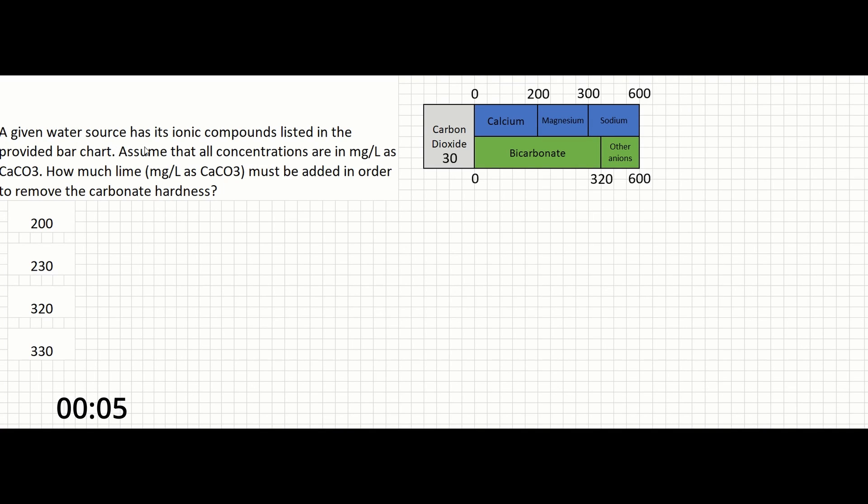A given water source has its ionic compounds listed in the provided bar chart. Assume that all concentrations are in milligrams per liter as CaCO3. How much lime in milligrams per liter as CaCO3 must be added in order to remove the carbonate hardness?